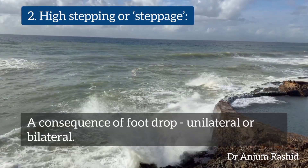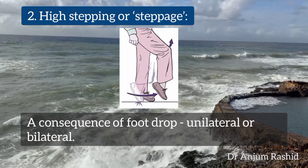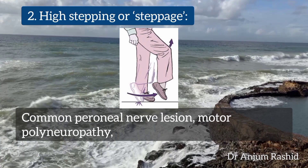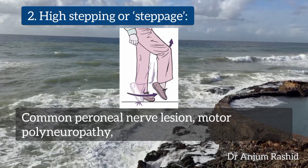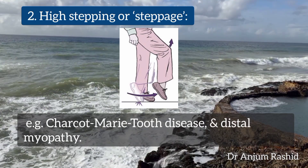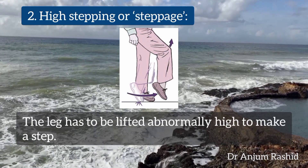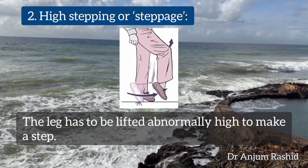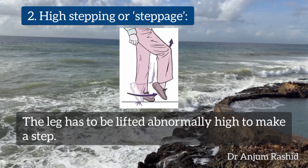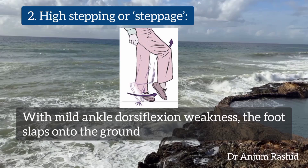The second type is high stepping gait or steppage gait. This is a consequence of foot drop, which may be unilateral or bilateral, and is due to common peroneal nerve lesion, motor polyneuropathy — for example Charcot-Marie-Tooth disease — and distal myopathy. In this type of gait, the leg has to be lifted abnormally high to make a step, with mild ankle dorsiflexion weakness.